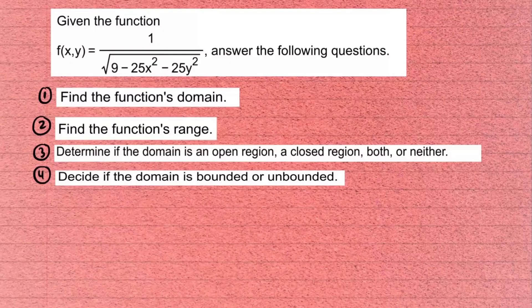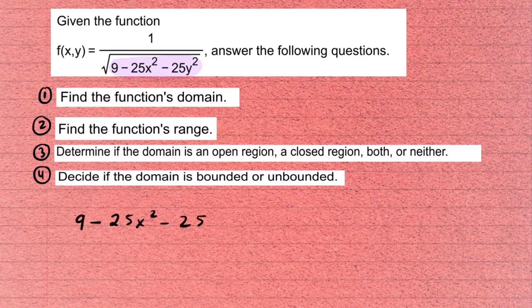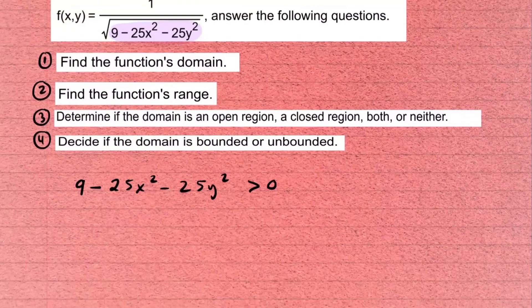Now for another example: f(x, y) = 1 / √(9 - 25x² - 25y²). We want to find the domain. This function is undefined when the expression under the square root is negative or zero, so we need 9 - 25x² - 25y² strictly greater than zero.